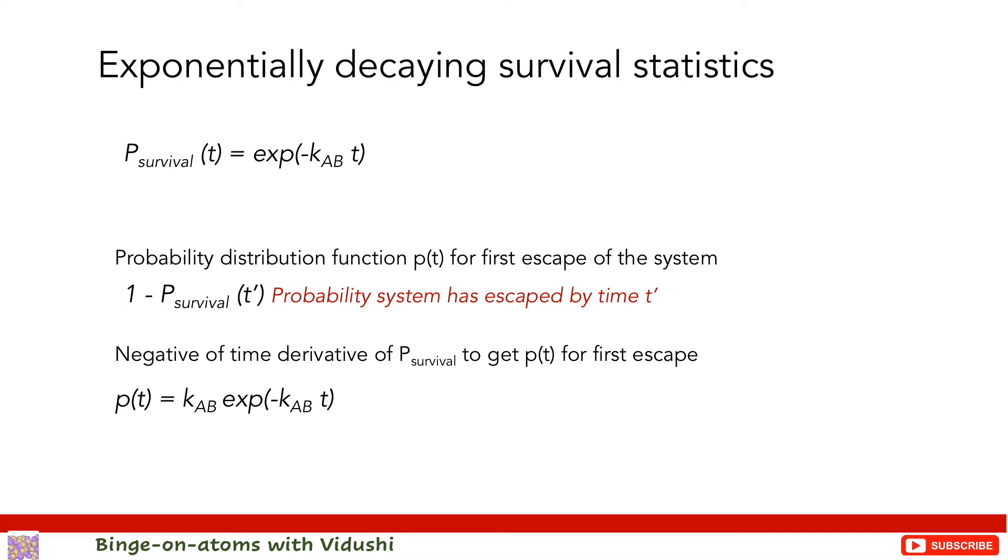This gives us the probability distribution for the time of first escape from state A: P(t) equals KAB exponential of negative KAB times t. We use this passage time distribution to get the time of escape as integral of probability distribution and get TAB, the average time of escape, equals 1 by KAB. Please note that this TAB is the average time of escape.